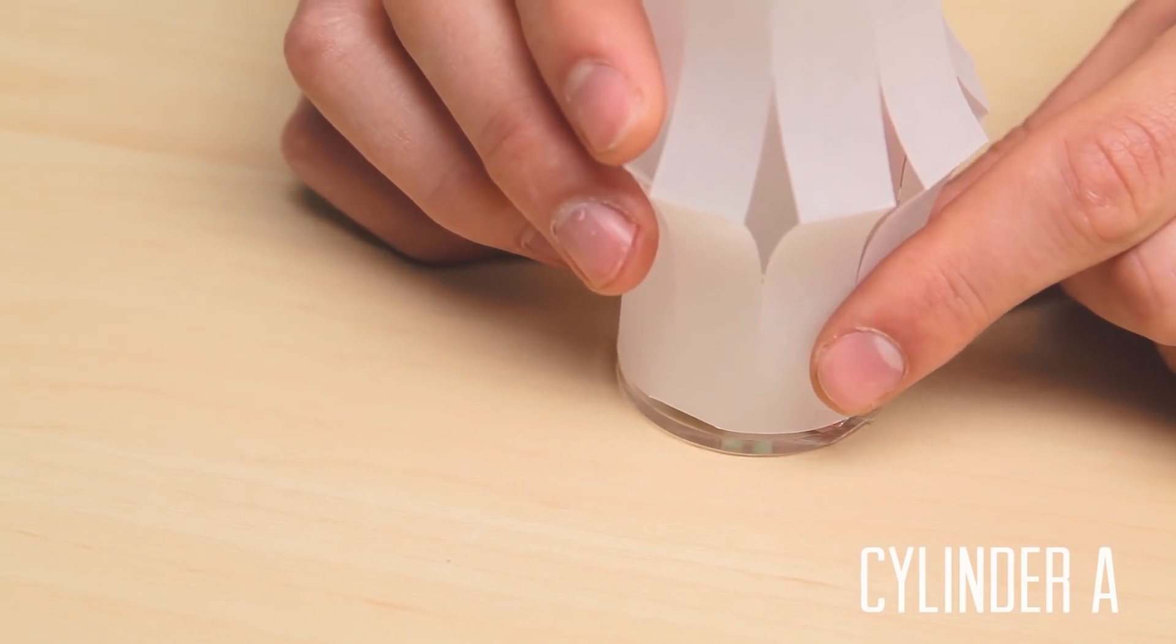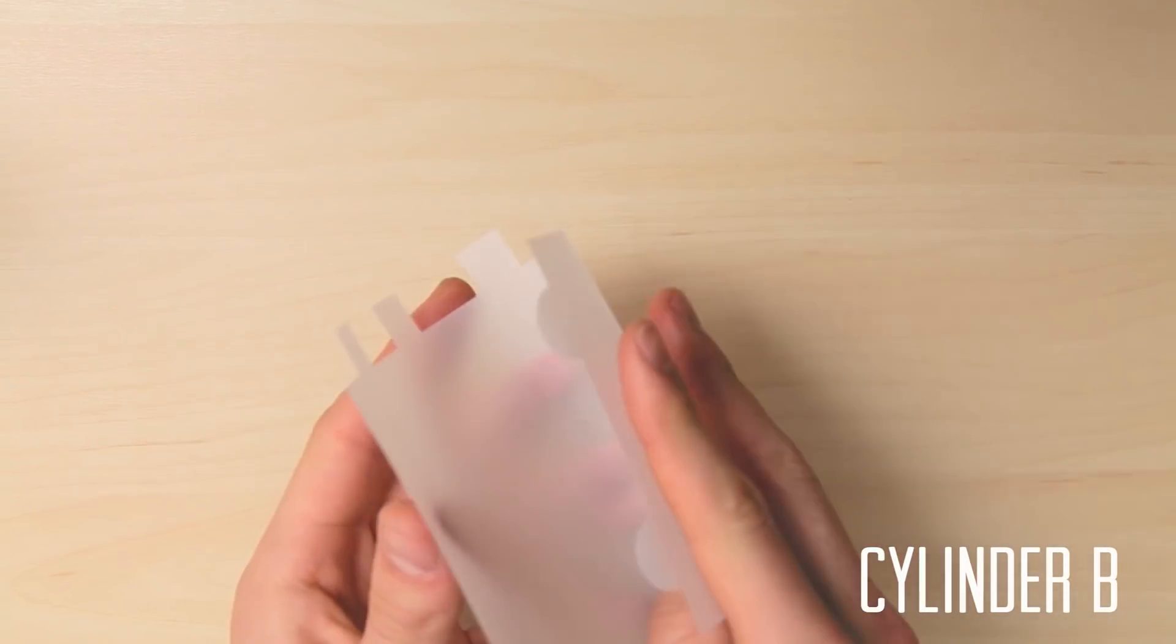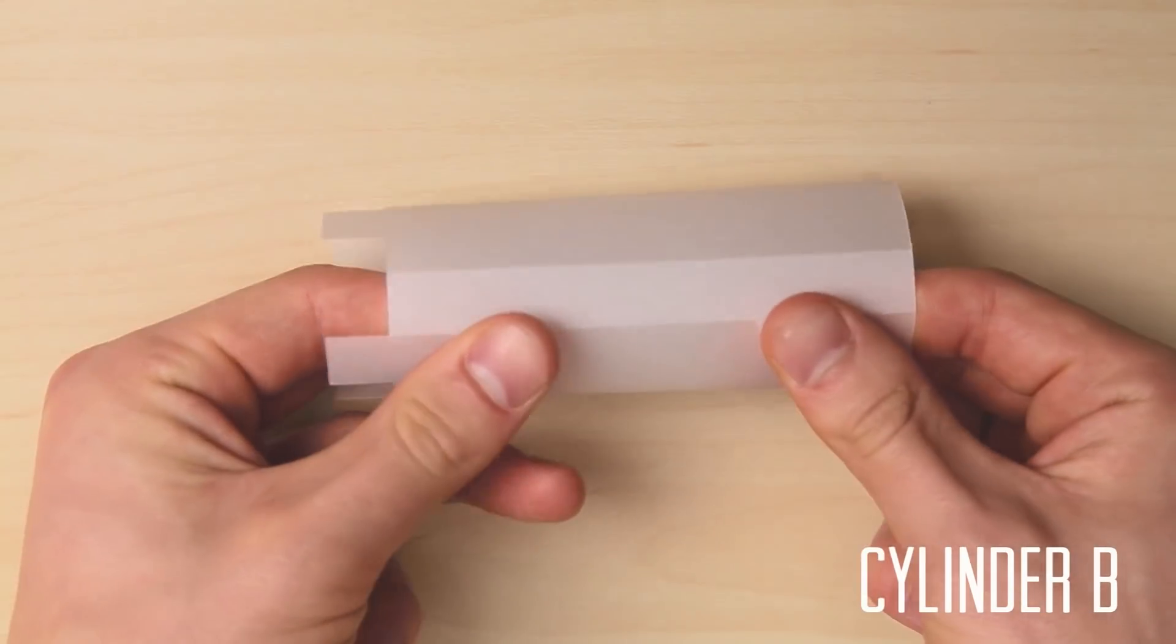Your cylinder lantern actually has two options. You can cut slits to make a more complex shape, or you can leave it a simple cylinder, which is better for silhouettes.